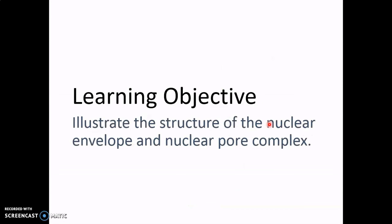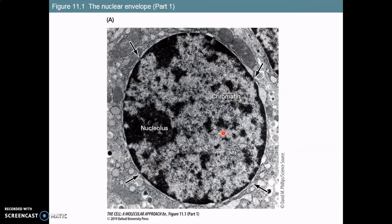Coming back to our learning objective: looking at the structure of the nuclear envelope and the nuclear pore complex. Here is our nucleus. Inside, we have all the various chromatin — a combination of DNA and proteins that the DNA is packaged up in. Remember, there are two meters of DNA in each one of our cells and it has to be packaged up. Wrapped around the outside, we have a membrane, and if you look closely, you can see little channels going in and out — those are what we call nuclear pore complexes.